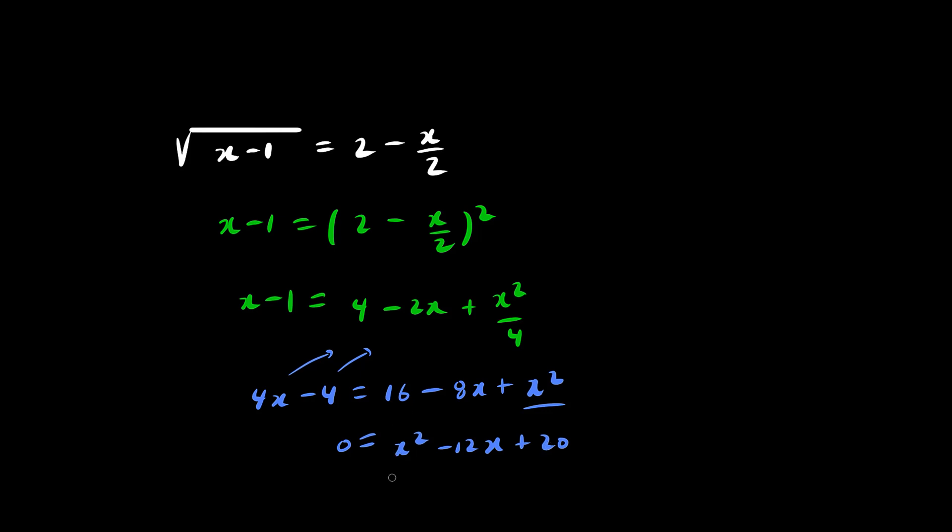And so the question now is can we factor. What times what becomes x? It's x times x is x squared. And what times what is 20? It adds to be negative 12.